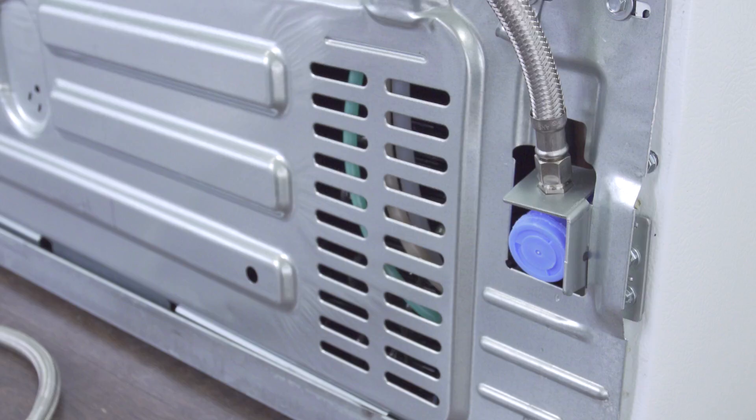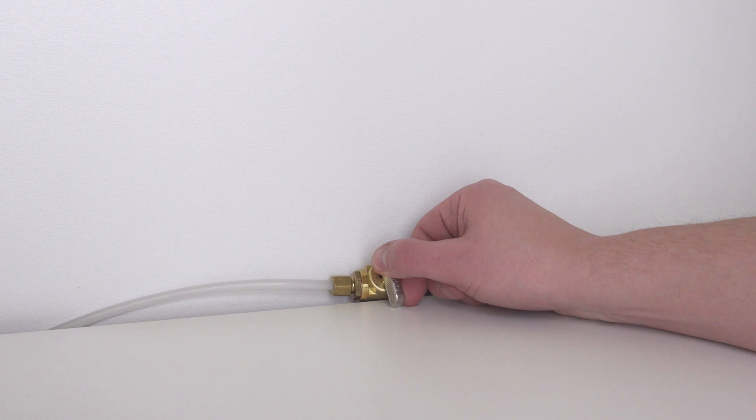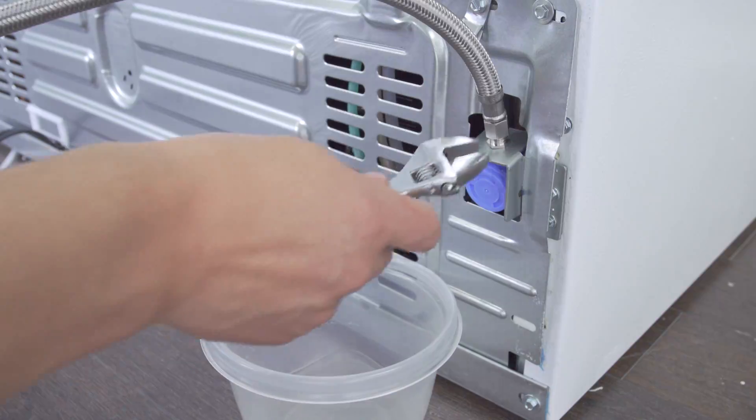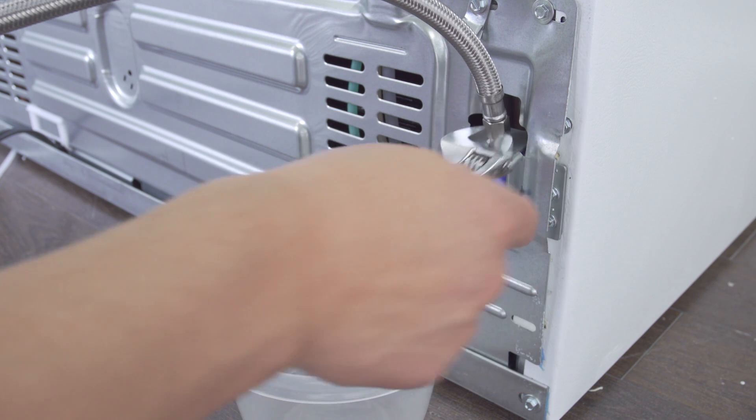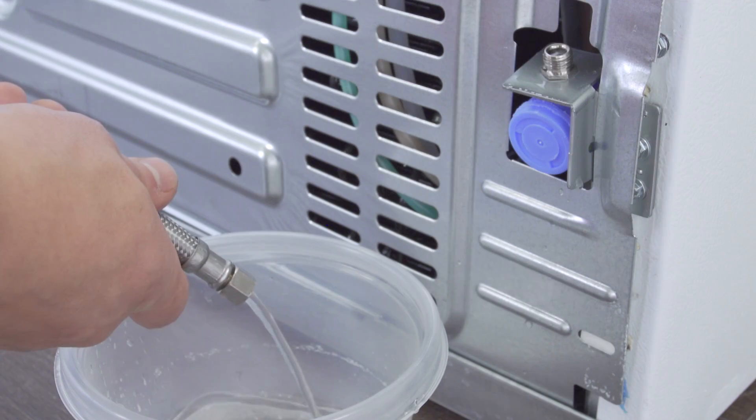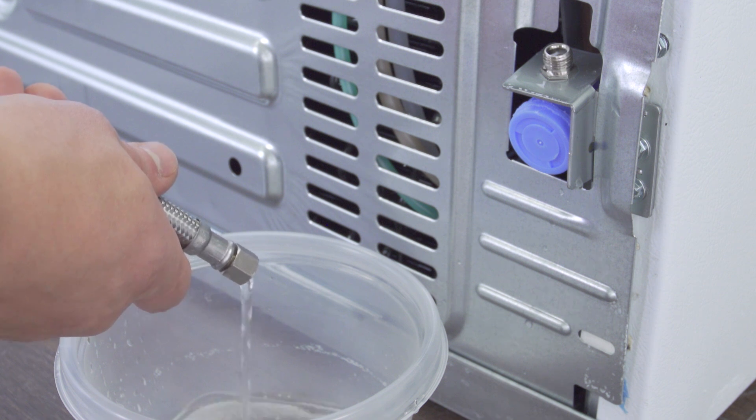In some models, you might need to remove the water supply line to gain access to the back. Close the shutoff valve to turn off the water supply. Next, use an adjustable wrench to loosen and remove the supply line. Let any remaining water drain into a plastic container.